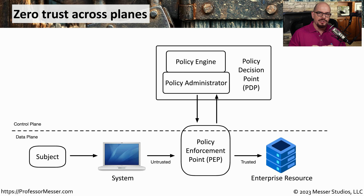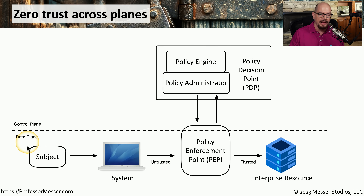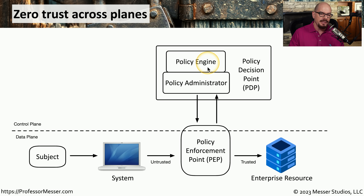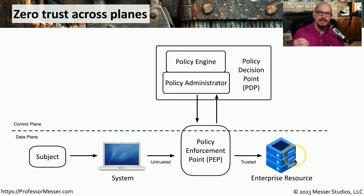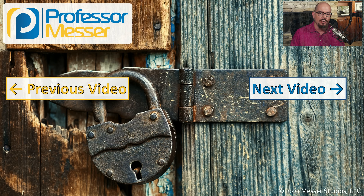Putting this all together creates a single zero trust model: subjects and systems communicate from an untrusted zone over the data plane through the policy enforcement point. If enforcement is needed, the enforcement point communicates to the policy administrator, which communicates to the policy engine to decide whether traffic is allowed. That result passes back down to the policy administrator, then to the policy enforcement point. If traffic is allowed, the policy enforcement point grants access to the trusted zone and ultimately to the enterprise resource requested.